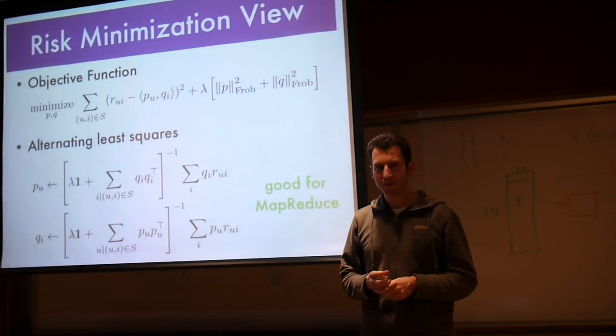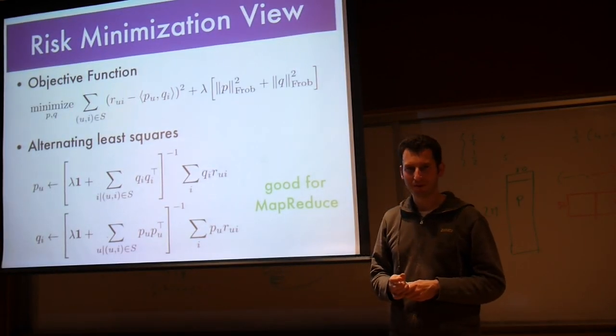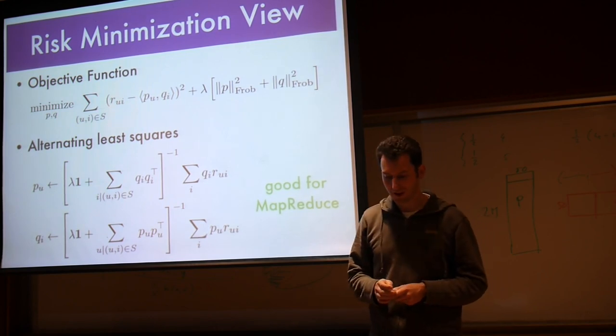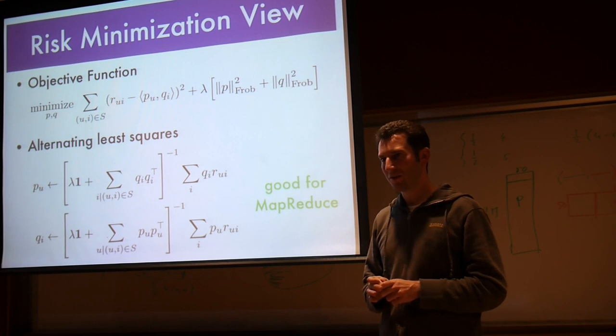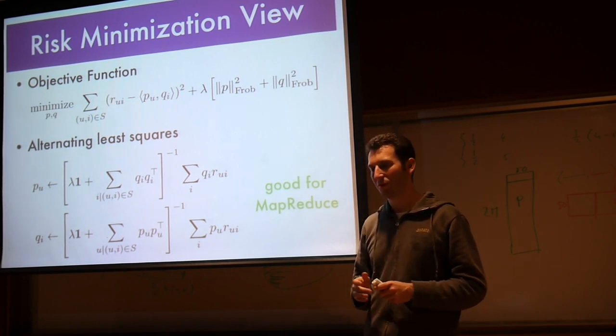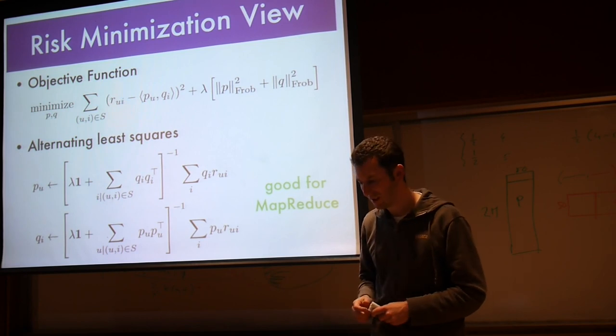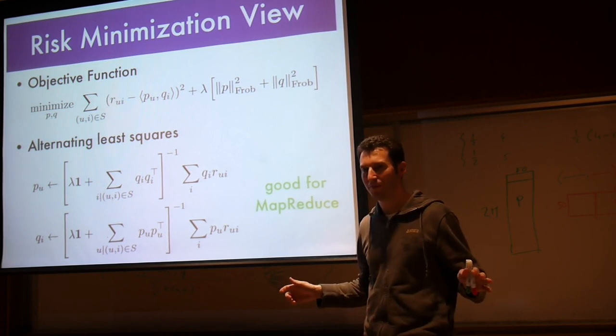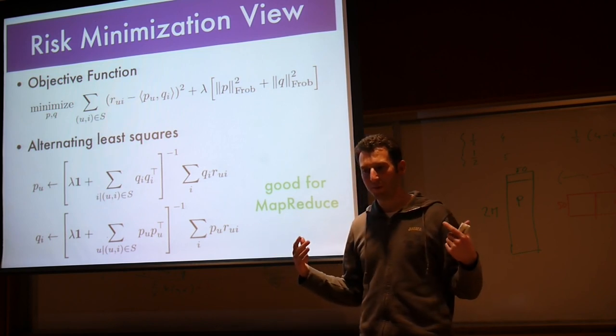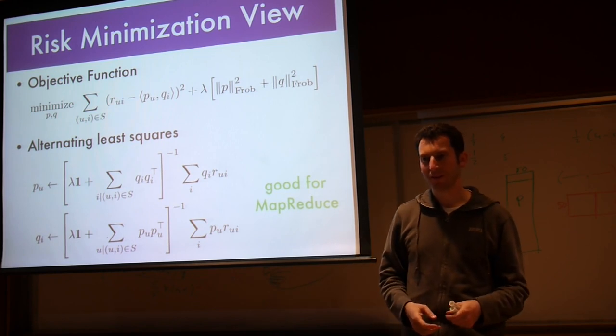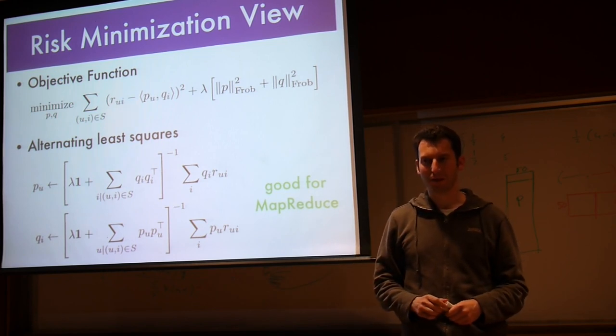The nice thing is, this is trivial to implement in MapReduce. Because basically, at each MapReduce stage, once you split over all the movies and give them all the user vectors correspondingly, you update for each movie independently. That trivially parallelizes, and you do maybe a dozen iterations.